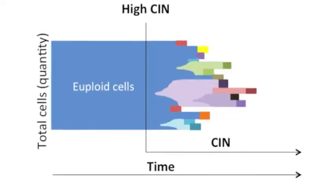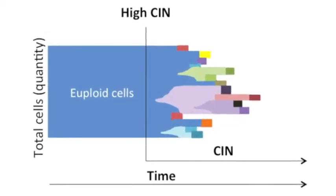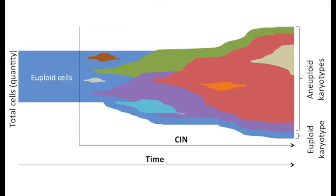This may seem paradoxical at first. How can something which causes a growth defect in most circumstances be beneficial to growth in cancer? This paradox can be better understood if you assess CIN and aneuploidy separately, taking into account in vitro and in vivo contexts, the rate of CIN, and the severity of the aneuploid karyotype.